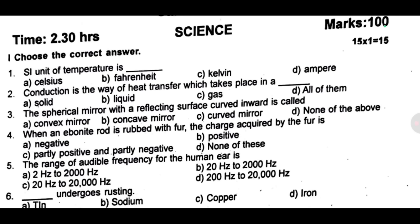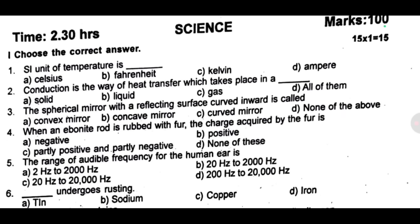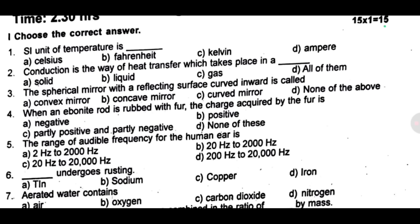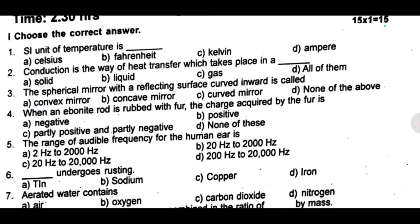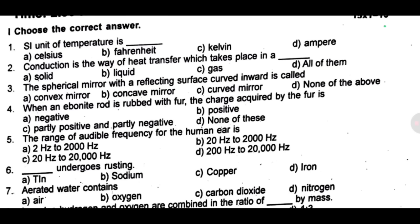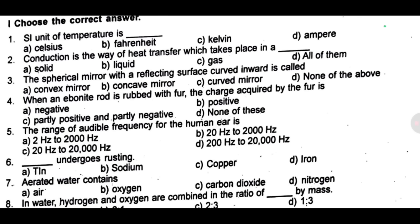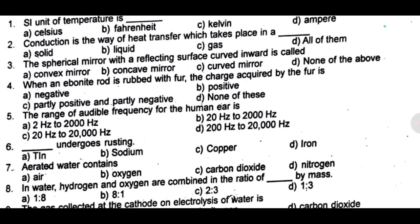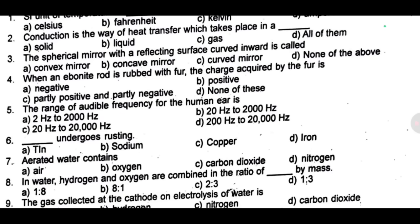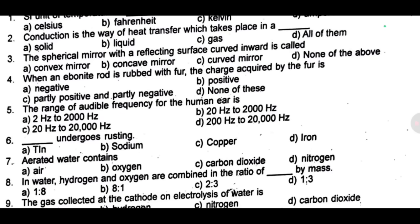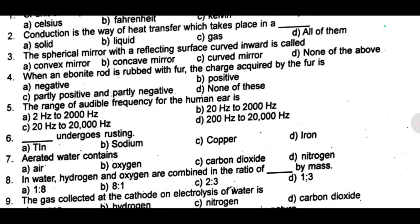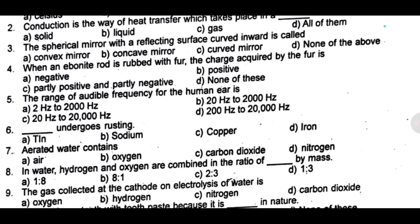Fourth one: when an ebonite rod is rubbed with fur, the charge acquired by the fur is dash. Fifth one: the range of audible frequency for the human ear is dash. Sixth one: dash undergoes rusting.